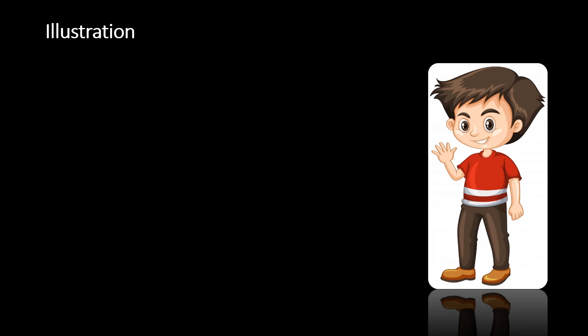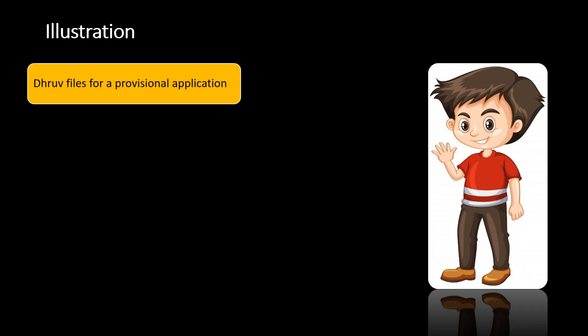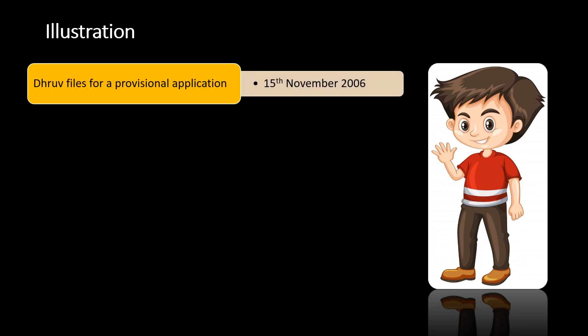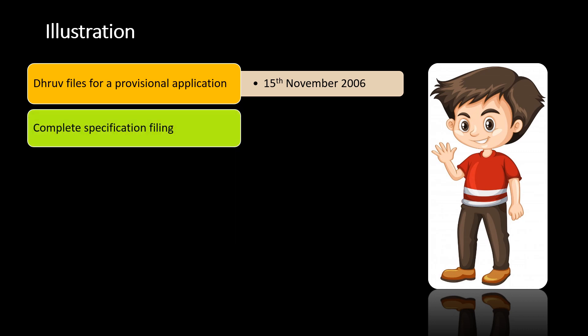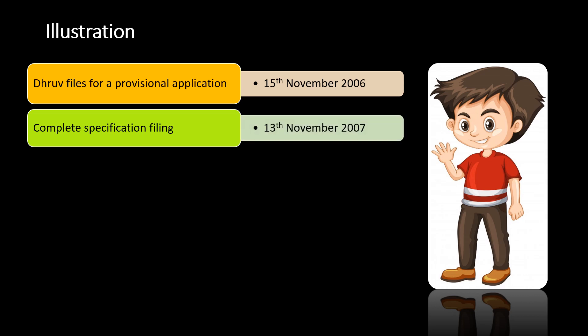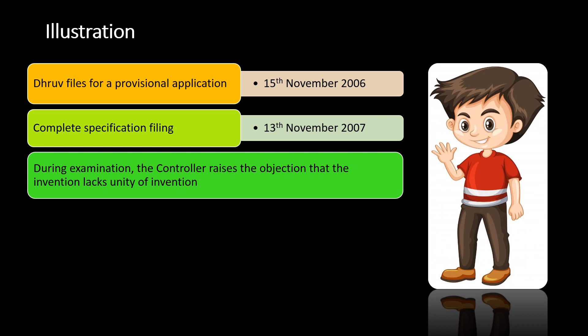Let's understand this with the help of this illustration. Suppose Dhruv files for a provisional application on 15th November 2006. Now you know that the date for filing the complete application for him is 12 months from his date of provisional application. Assume that he files his complete specification on 13th November 2007.